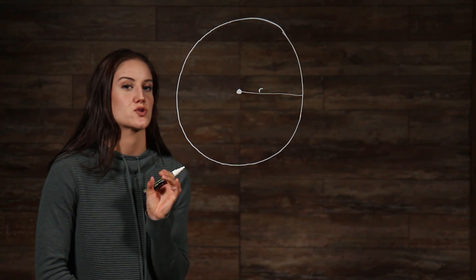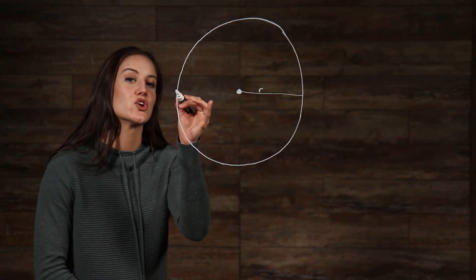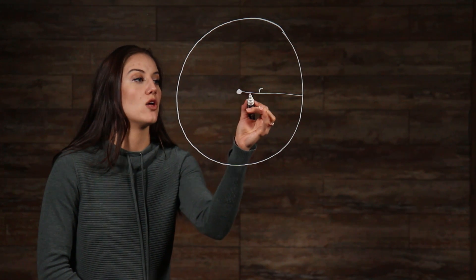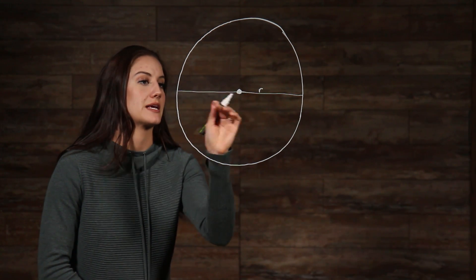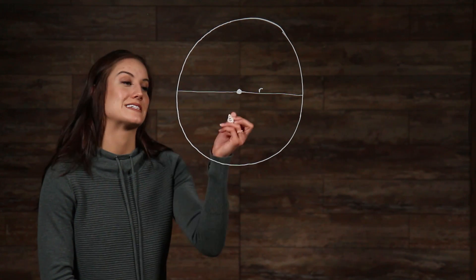Diameter is the full length of the circle, running from the edge through the midpoint all the way to the other side. That is this whole length right here. The diameter of a circle is represented by the letter d.